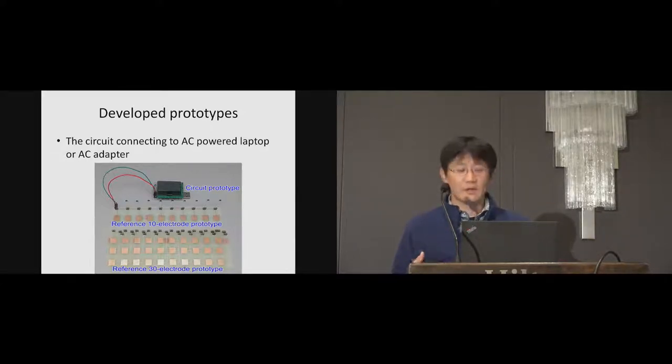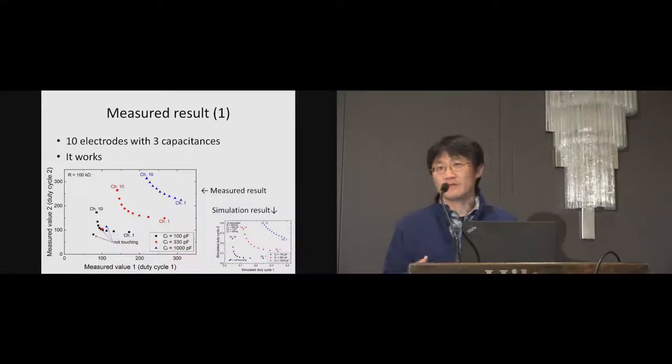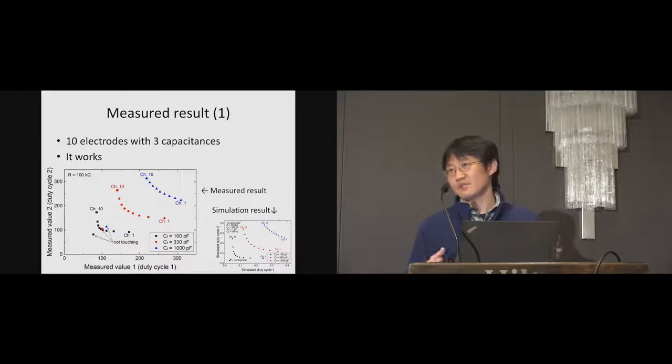The prototypes were developed. The circuit is assumed to connect to the AC powered laptop or AC adapter to establish the coupling to ground. This is the measured result. The left graph shows an actually measured result, and the right graph shows the corresponding simulation result. The measured result is almost the same as simulation result, and it is confirmed that the pair of capacitances differ according to the touched electrode.